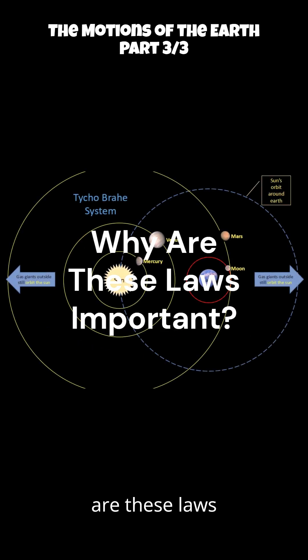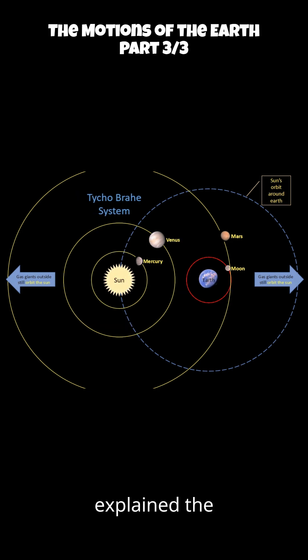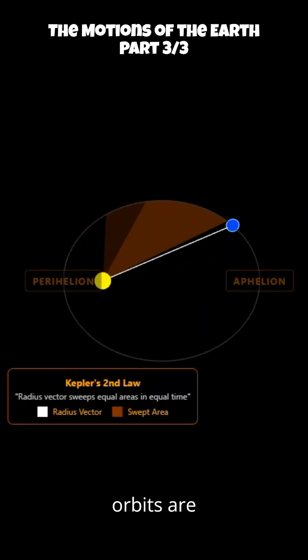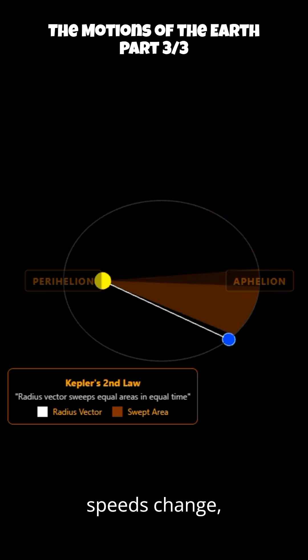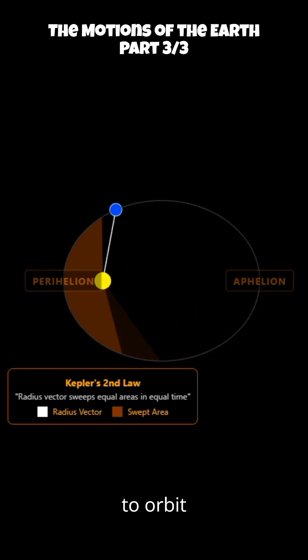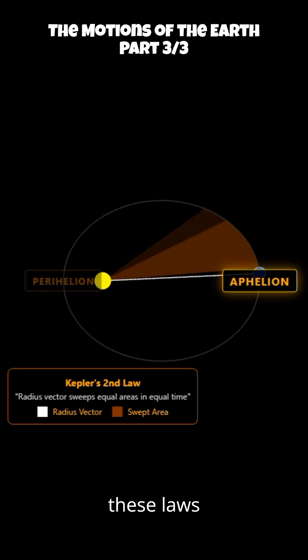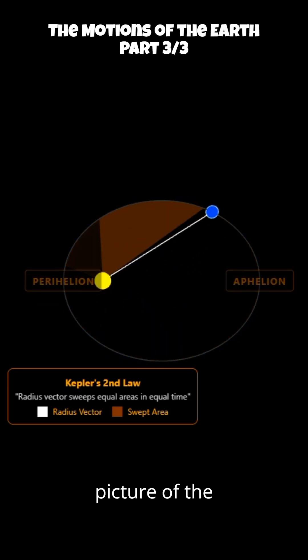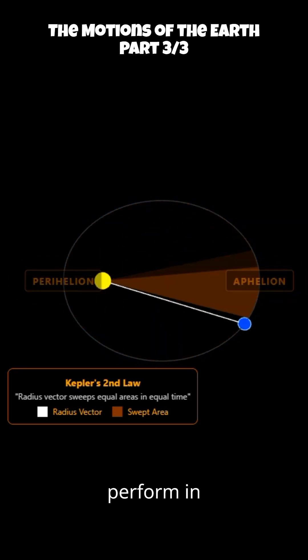Why are these laws important? Kepler's laws explained the mysteries of planetary motion that early astronomers like Tycho Brahe and Ptolemy couldn't. These laws showed that orbits are elliptical, speeds change, and distances relate closely to orbit times. Also, these laws give us a clear and accurate picture of the beautiful dance planets perform in space.